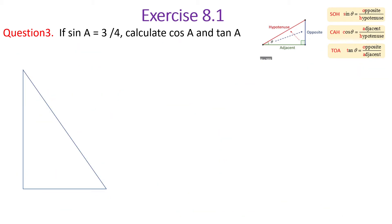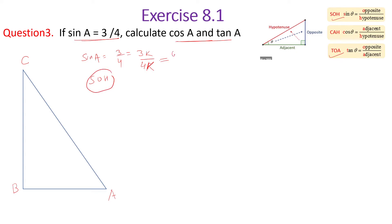Now question 3 — a similar but easy problem. Given that sine of A equals 3 upon 4, calculate cos A and tan A. We know SOH-CAH-TOA. Label the triangle with vertices A, B, C and right angle at B. Since sine of A equals 3/4, we write the sides as 3k for opposite and 4k for hypotenuse.